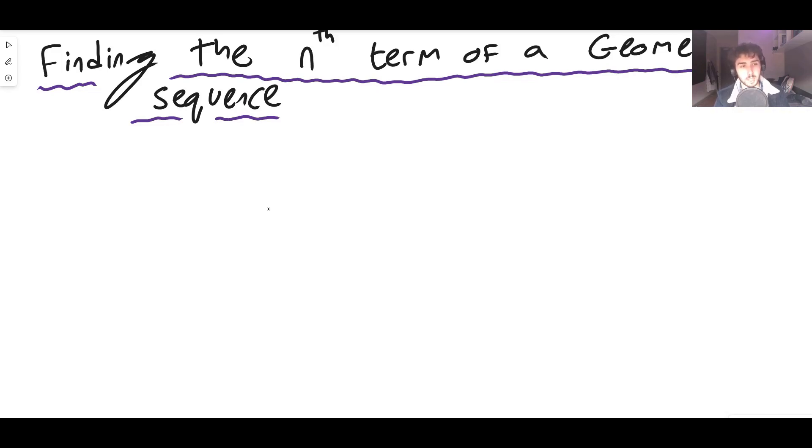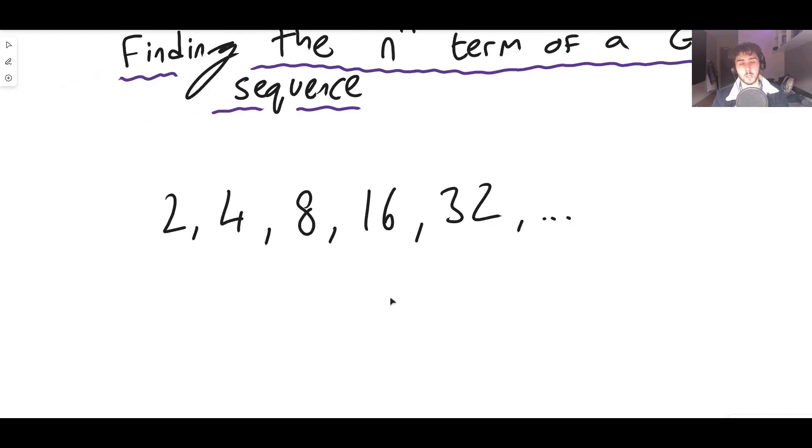So I'll give you an example. Something like the sequence 2, 4, 8, 16, 32, etc. This is a geometric sequence not arithmetic.